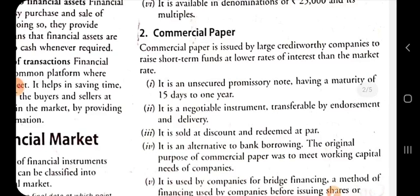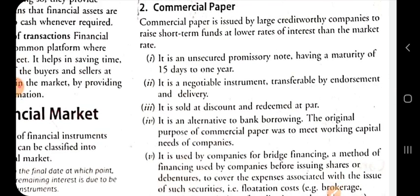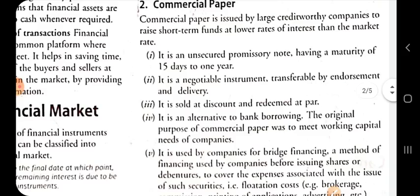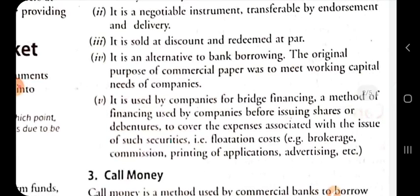The second instrument is commercial paper, issued by large credit-worthy companies to raise short term funds at lower rates of interest than the market rate. Its maturity period is from 15 days to one year. It is also issued at a discount and redeemable at par. Commercial paper is issued by companies to meet their working capital needs, and it is also used as bridge financing where the company issues commercial paper for meeting flotation costs on the issue of securities.